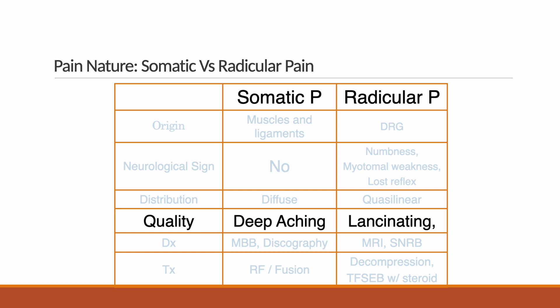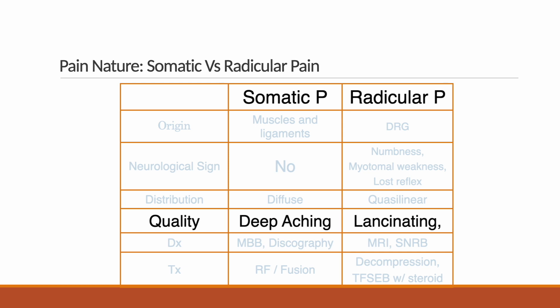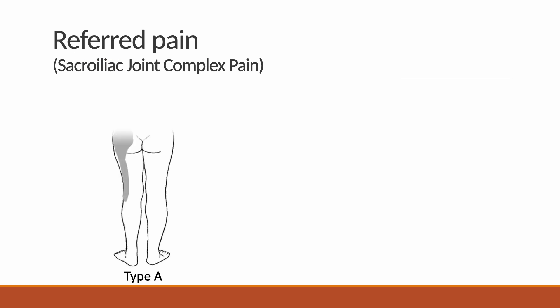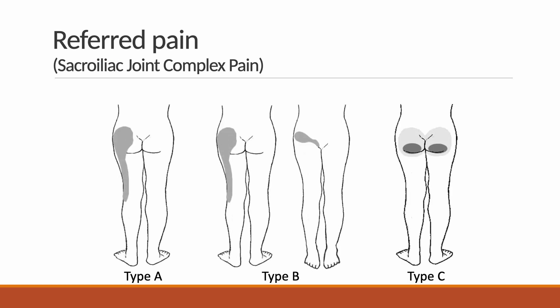Radicular pain shows lancinating, electrical, discrete radiating pain characters. In addition to describing pain nature, radicular pain may contain neurologic abnormalities and shows cross-linear pain distribution. Referred pain — such as that arising from the sacroiliac joint — means the patient feels pain in a region innervated by nerves other than the actual source. It is a kind of confusion of brain perception.